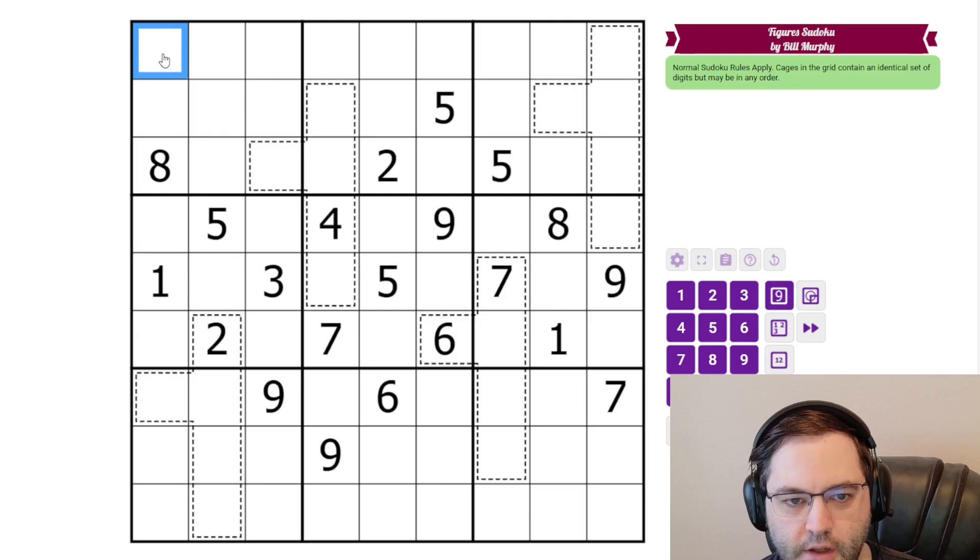Anyway, normal Sudoku rules. One to nine in each row, column, and three by three box. Additionally, we have some figures in the grid. They are all shaped the same and they must contain the same digits.